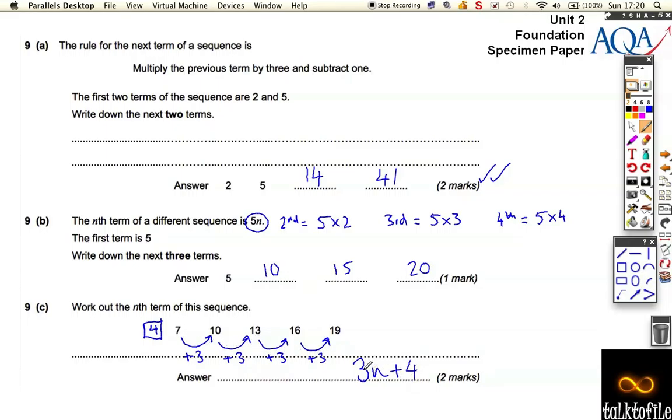So it means 3n plus 4. So it jumps up 3, that's 3n, 4 comes before, plus 4. Nice. Hopefully, we should be able to get those five marks on this question. Thank you.